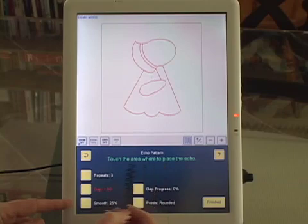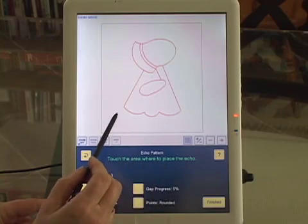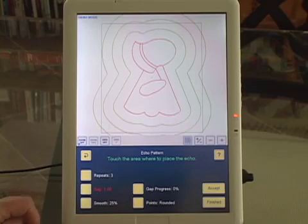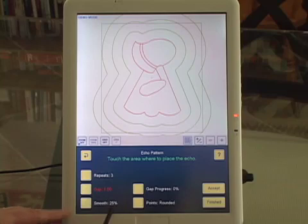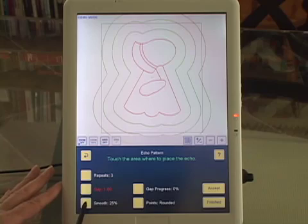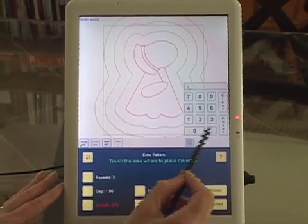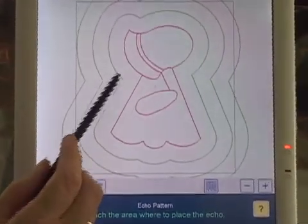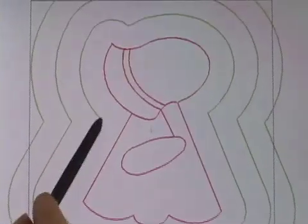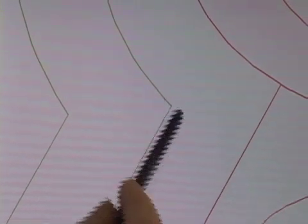And now I'm going to touch the area where I want to place the echo. And there are the echoes outside my Sue, exactly where I want them. Now, we have a button here that says Smooth, and right now, the echo lines are smoothed 25%. If I touch this and change it to 0%, you will see how much sharper this is. I'm going to zoom in right here, so you can see that change. See how that is sharp?